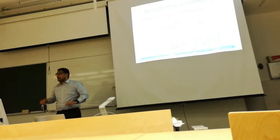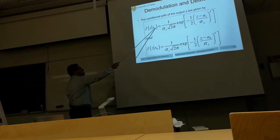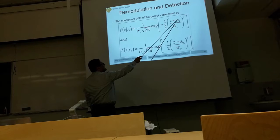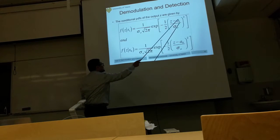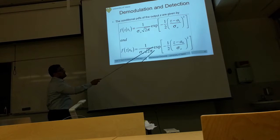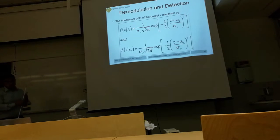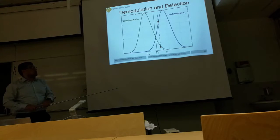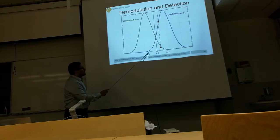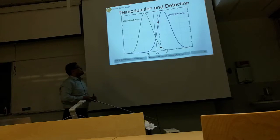We can now define the conditional distribution. The distribution of Z given S1 was transmitted is Gaussian shifted by A1 — so A1 is the mean. Similarly, if S0 was transmitted, Z has a Gaussian distribution shifted by A0. If we draw both distributions, we have one Gaussian centered at A0 for S0 and another Gaussian centered at A1 for S1.